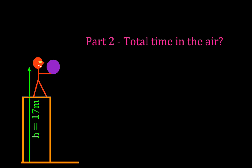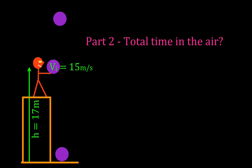In part two we're going to determine the total time that the object will be in the air when it's launched with an initial velocity of 15 meters per second, goes straight up, stops, comes straight back down to earth. We want to know how much time it will take for the ball to go up and back down when launched from a height of 17 meters with an initial velocity of 15 meters per second.